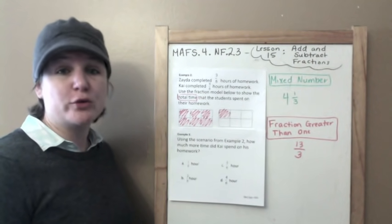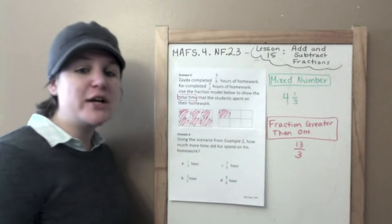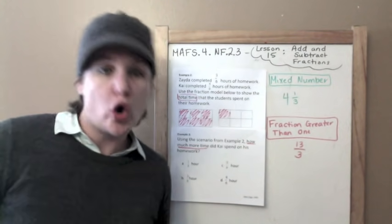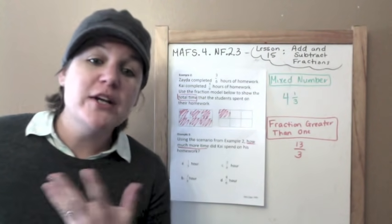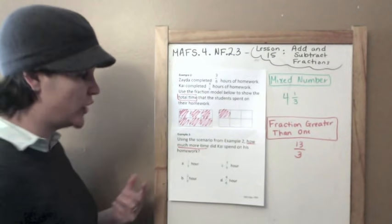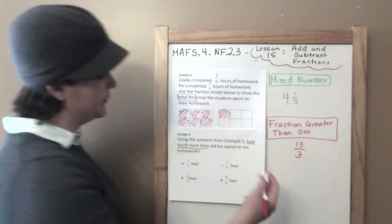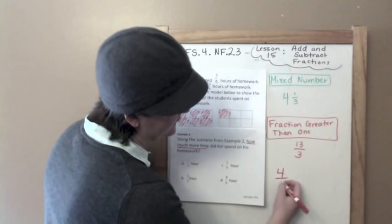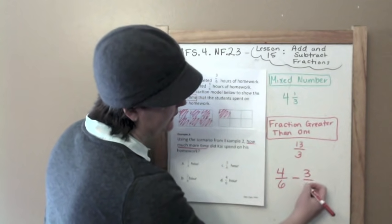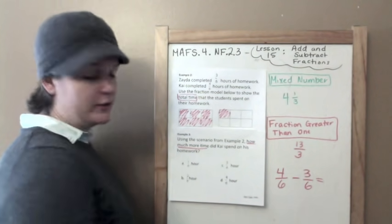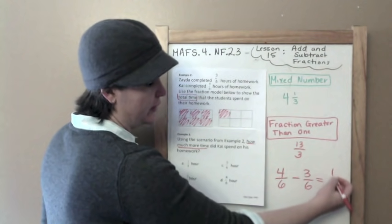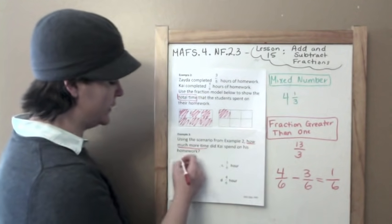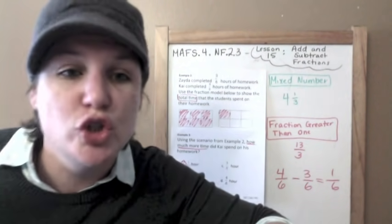Using the scenario from example 2, how much more time did Chi spend on his homework? How much more is a key word that we use for subtraction. How much more or how many more, okay? So how much more did Chi spend? Chi spent 4 sixths, we're subtracting what Zeta spent. Okay, denominators are the same so I subtract across. 4 minus 3 is 1, bring my 6 across, so 1 sixth of an hour.